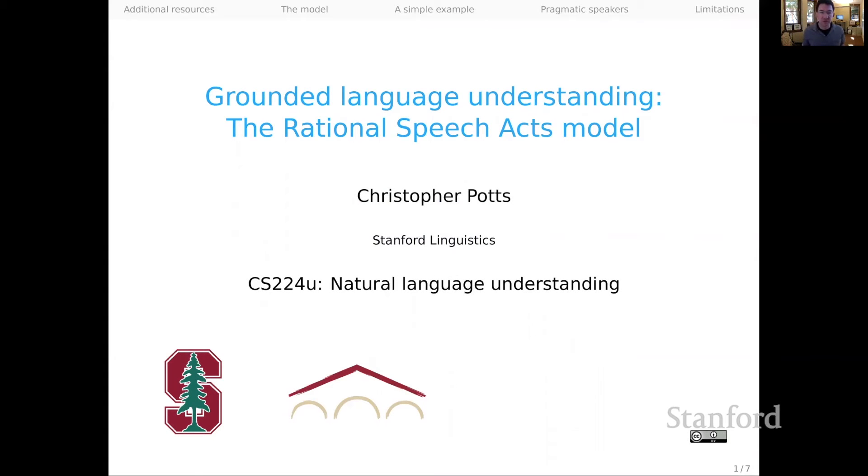Hello, everyone. Welcome to part five in our series on grounded language understanding. We're going to be talking about the Rational Speech Acts model, or RSA. This is an exciting model that was developed by Stanford researchers, Mike Frank and Noah Goodman, and it's a chance for us to connect ideas from cognitive psychology and linguistics with large-scale problems in machine learning.